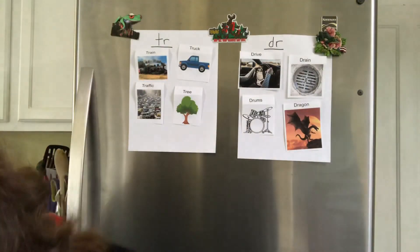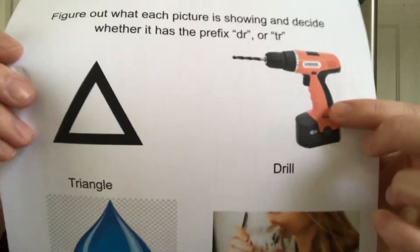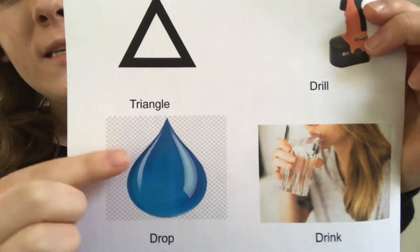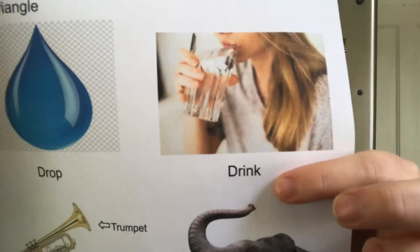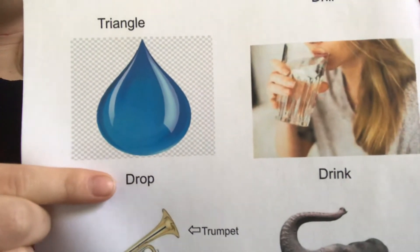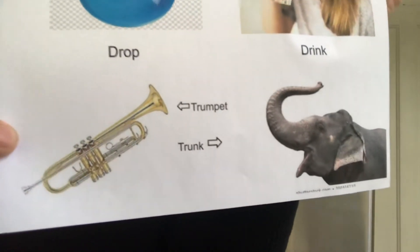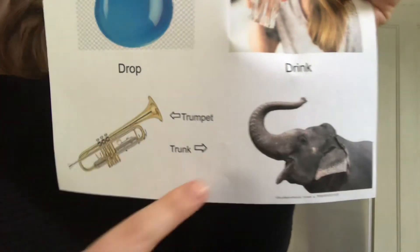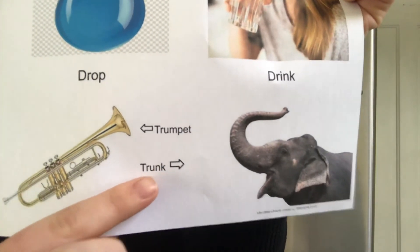Ready for some answers? Here we go. Drill — DR. If we look at this, triangle — TR. If we look at this one, it's a picture of somebody drinking, so drink — DR. If we look at this, this is a picture of a drop, so it has a D-R at the beginning as well. Down here at the bottom, this picture shows a special musical instrument — it's called a trumpet — TR. And this is pointing at the elephant's trunk — T-R, trunk.